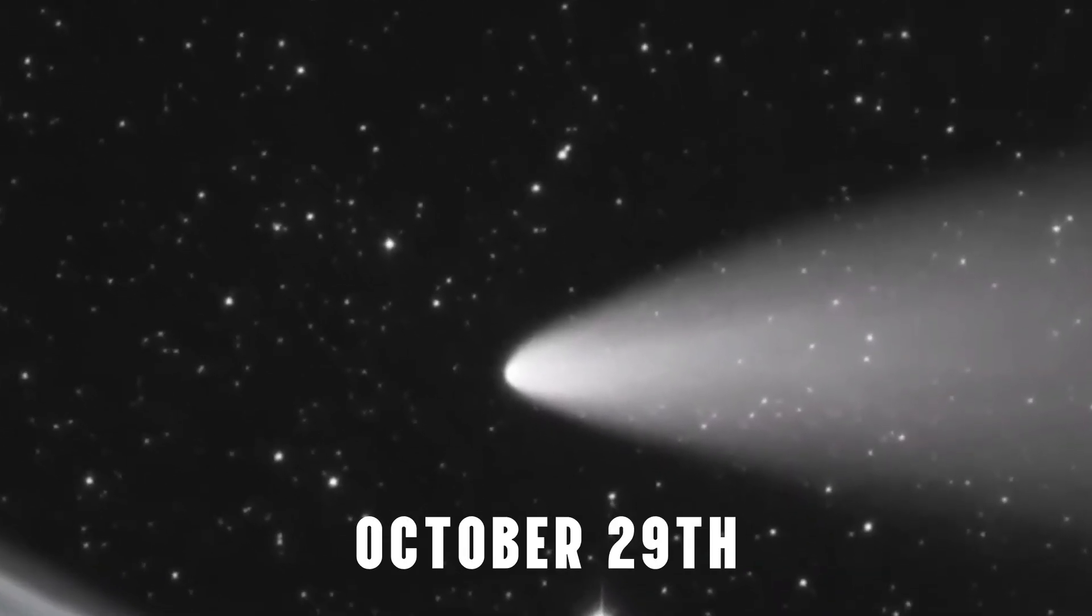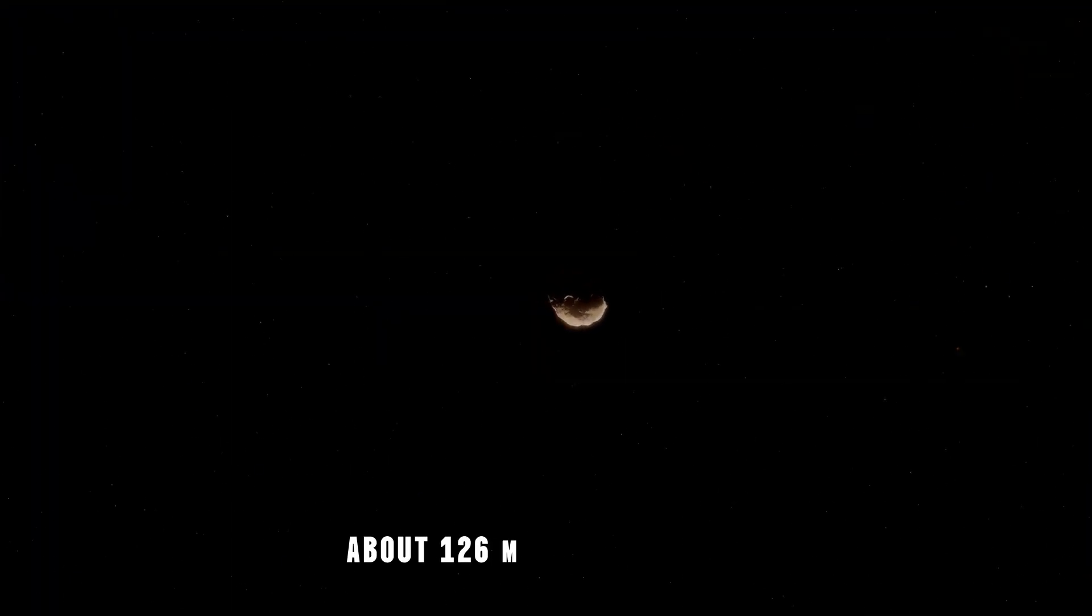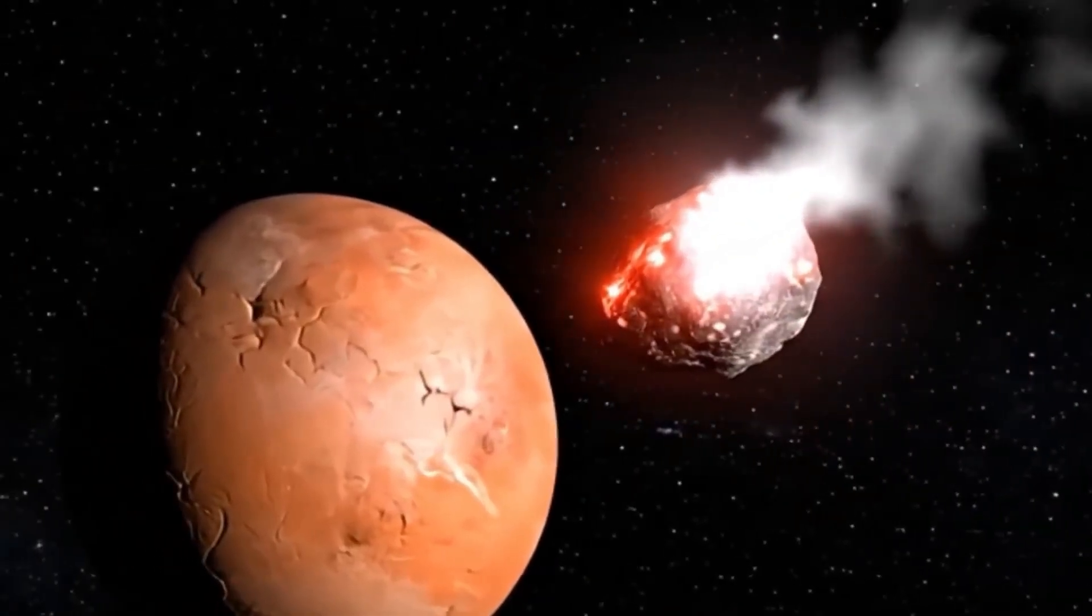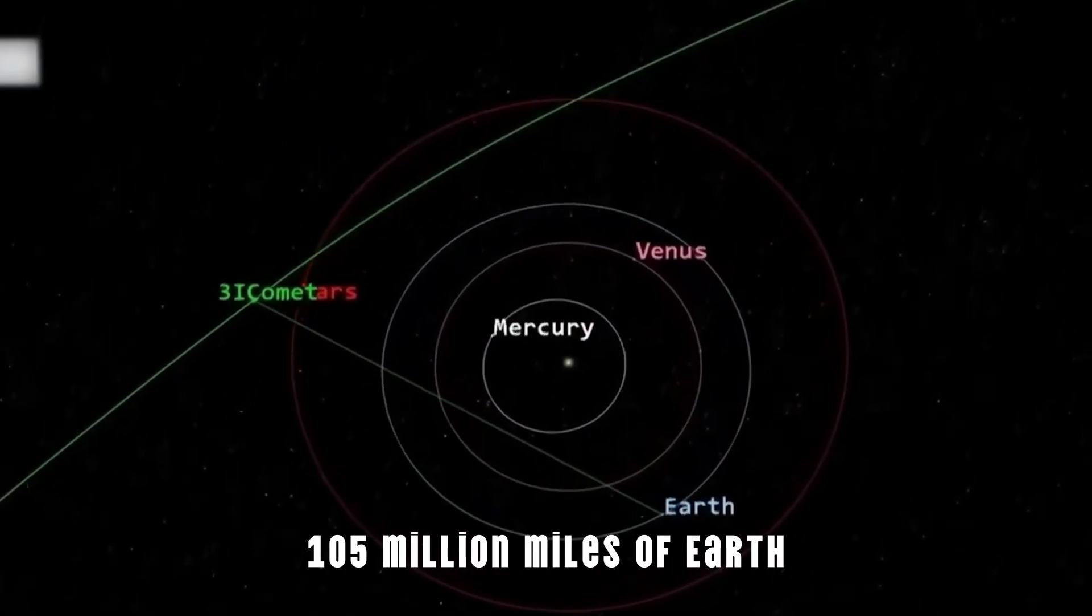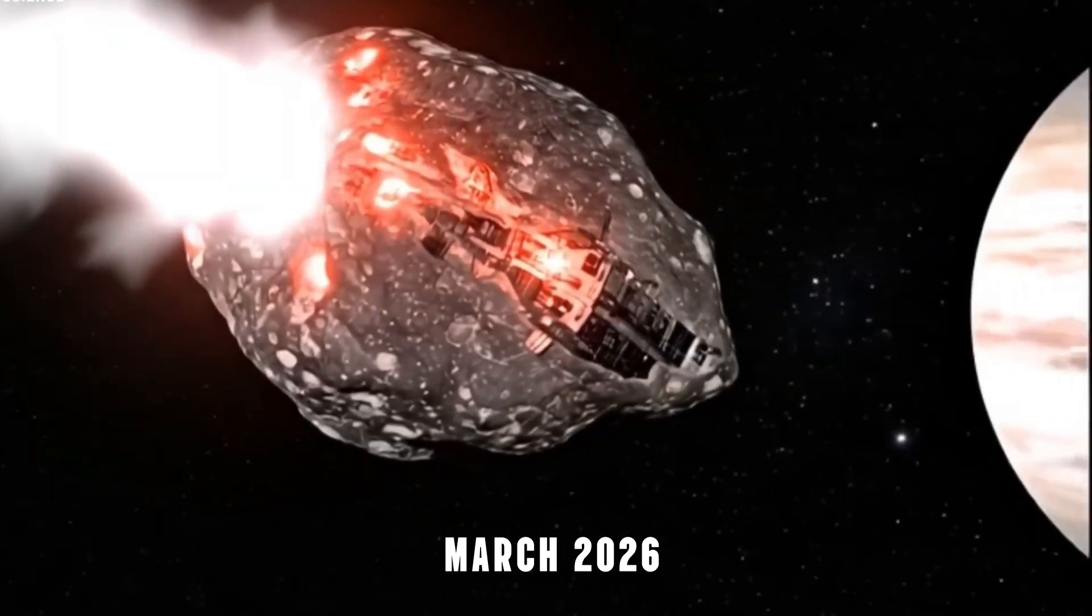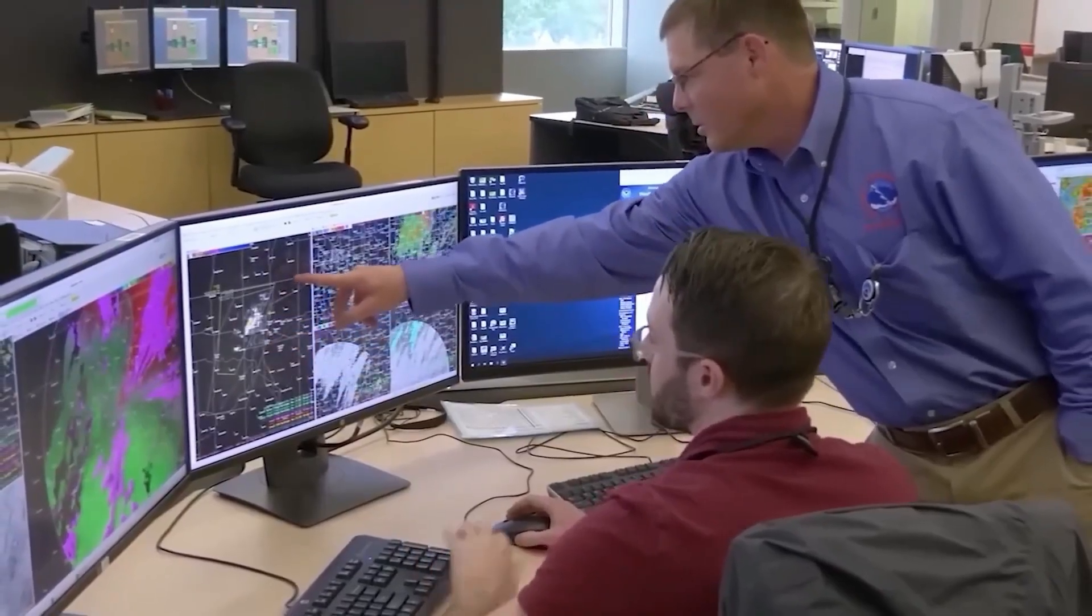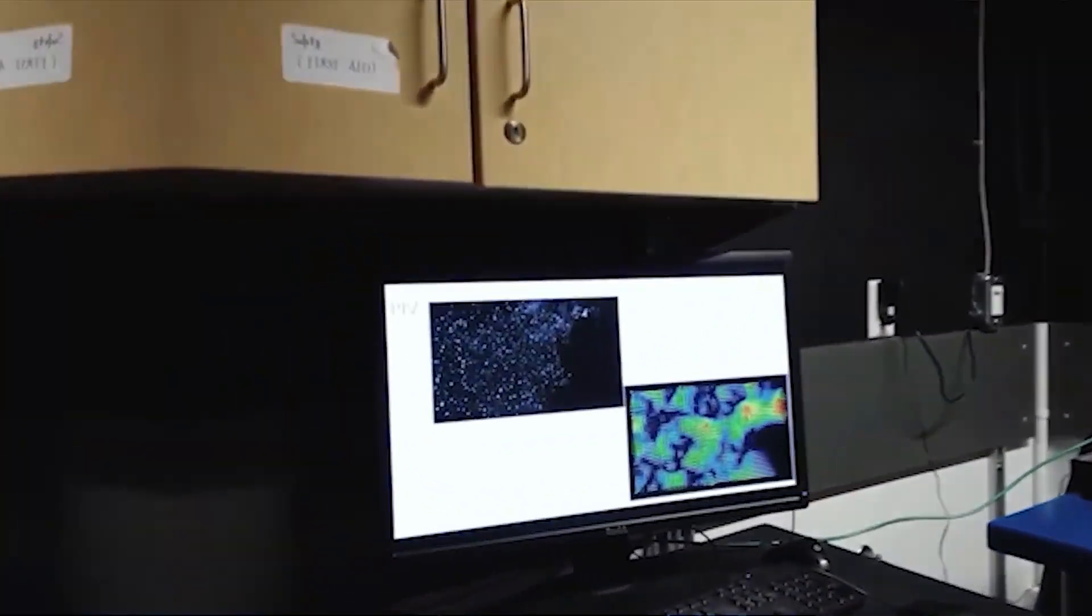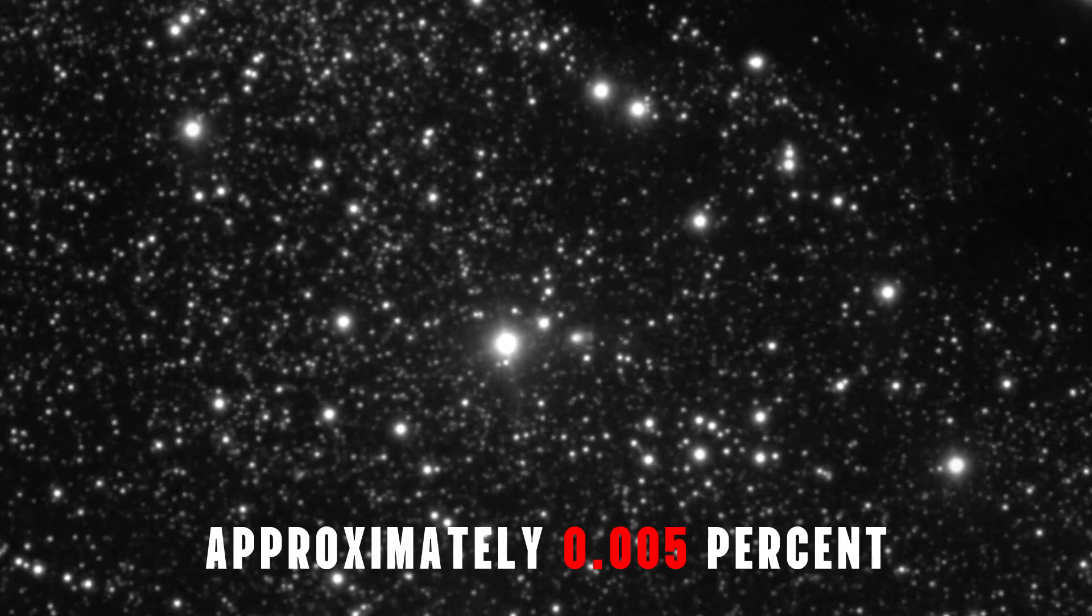On October 29th, 3i Atlas reached perihelion, its closest approach to the Sun, at about 126 million miles out. That's between the orbits of Earth and Mars. Then in December 2025, it will pass within about 105 million miles of Earth. Finally, in March 2026, it will swing within 20 million miles of Jupiter. When astronomers calculate the combined probability of a random interstellar object making such close approaches to four major bodies in our solar system, they get odds of approximately 0.005%. That's one chance in 20,000.